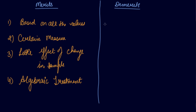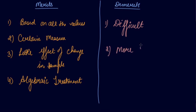The demerits are: it is difficult to calculate compared to other measures of dispersion. Also, extreme values tend to receive greater importance in the calculation of standard deviation.